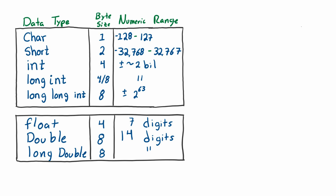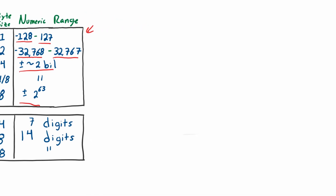In the last two videos, we talked about data type modifiers. One of the things we may have noticed when we looked at the numeric range on the table is that the negative value in the range can represent one more than the positive side. For example, with a short integer, the negative side goes to 768 while the positive side goes to 767. This also applies to int and long int. In this video, we're going to discuss why that's the case and talk about a particular issue that affects negative integers.